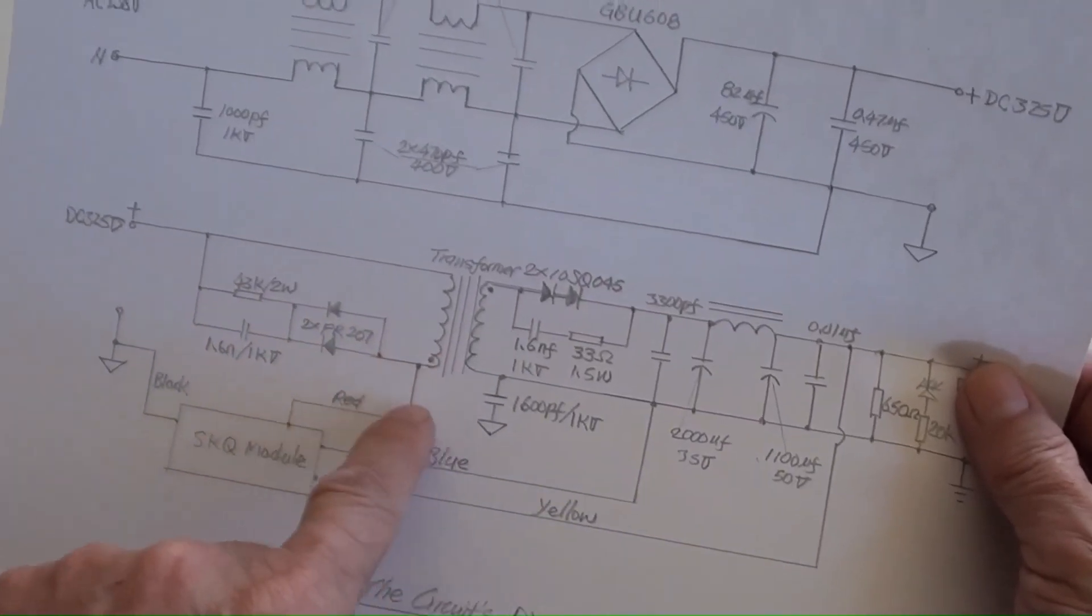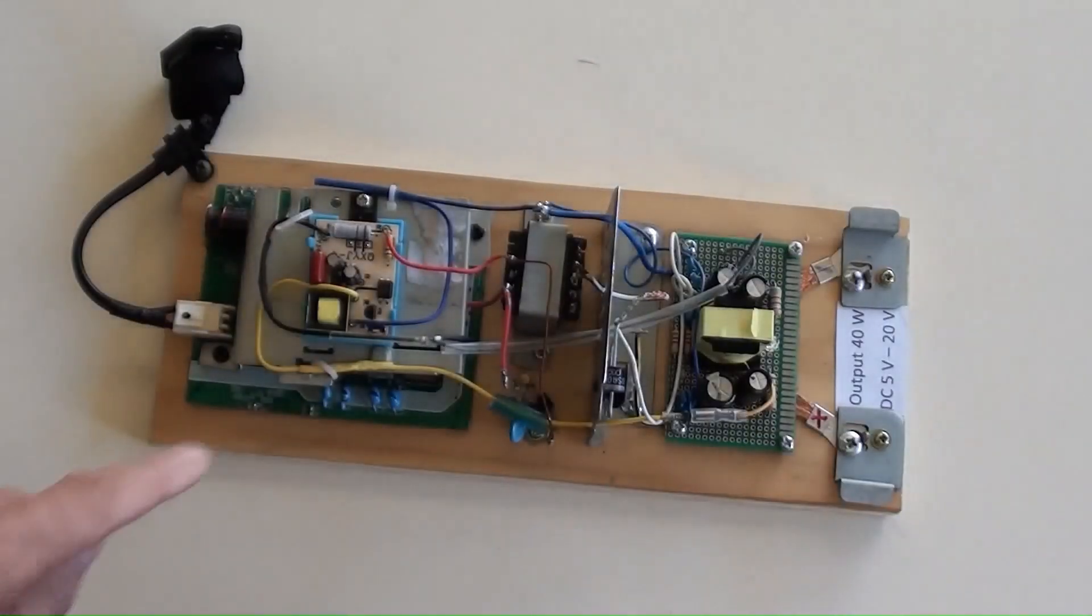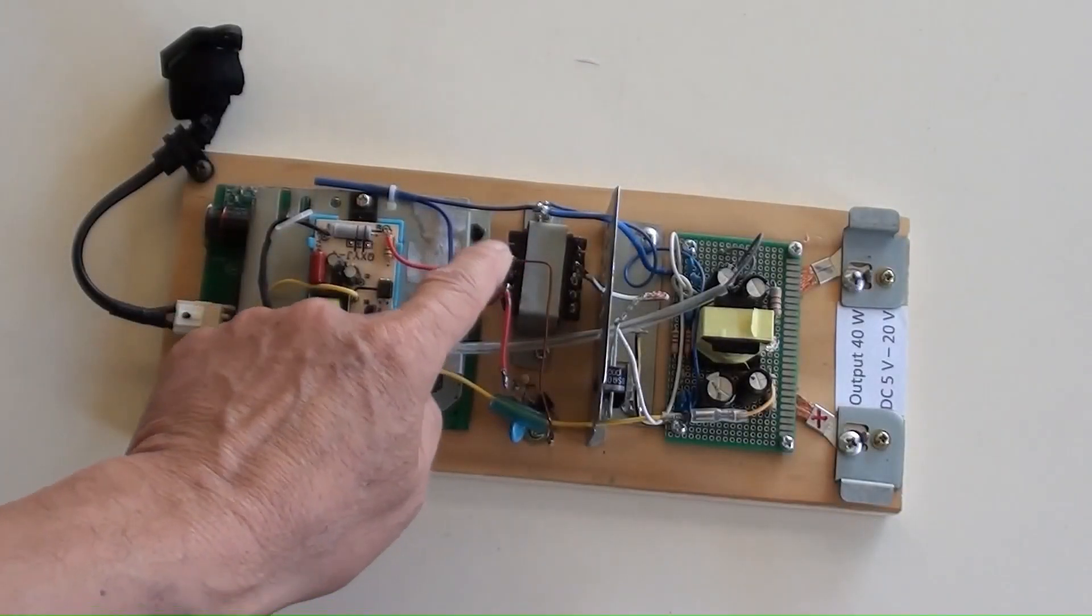However, the red wire from the DC sampling module is connected to the other terminal on the transformer.